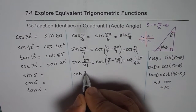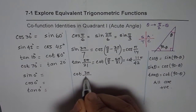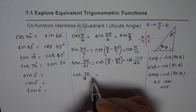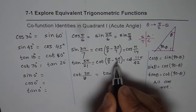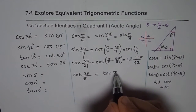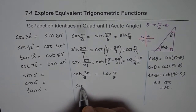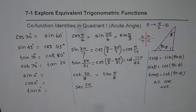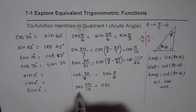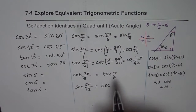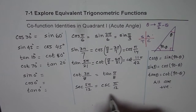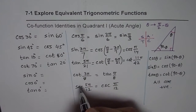For cot of 3 pi by 8 — since it is less than pi by 4 (which is 90 degrees) — the co-function is tan of pi by 8. For secant of 5 pi by 12: secant and cosecant are co-functions of each other. In pi by 2, there is 6 pi by 12, so 6 minus 5 leaves 1, giving cosecant of pi by 12. You can also compute pi by 2 minus 5 pi by 12 directly to get the same answer.